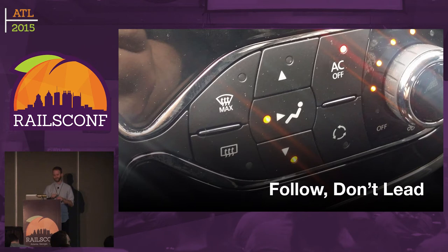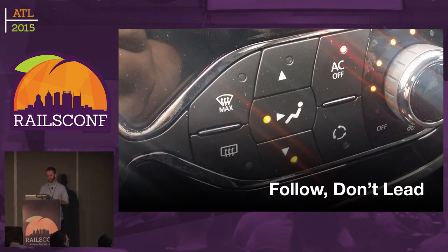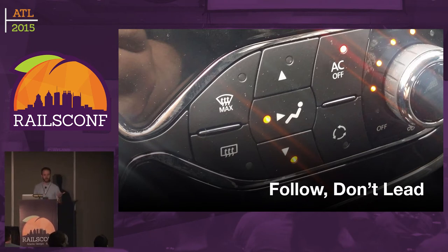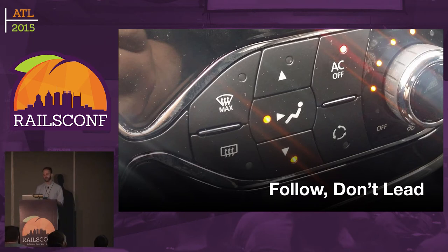There's a light for the air conditioning and the light is on, but the thing underneath says 'AC off.' So the light is on when the air conditioning is off, which doesn't make any sense. You're going to look at that and think the air conditioning is on because the light is on — because that's the way everything else works ever. But no, that's not how this one works. You don't want to be blazing new trails with your API most of the time.